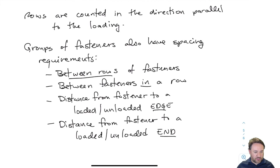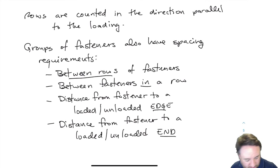A fastener is the general term — a nail is a fastener, a bolt is a type of fastener, a timber rivet is a type of fastener, and a shear plate is a type of fastener.